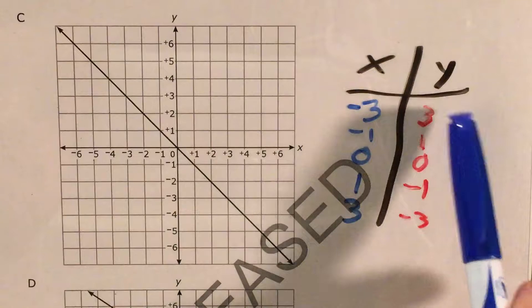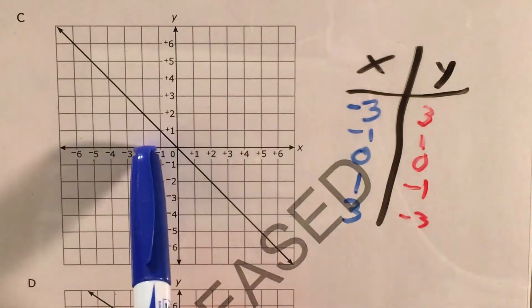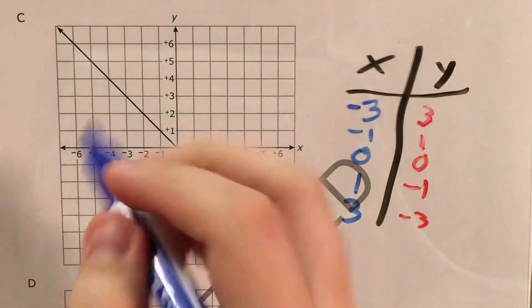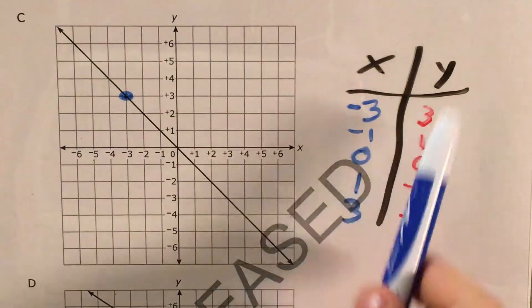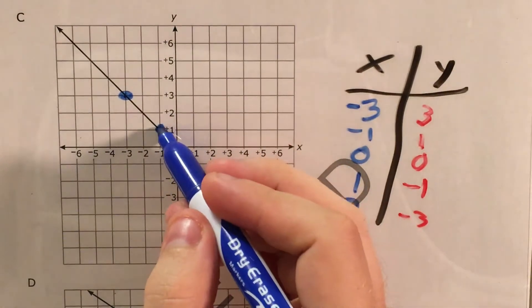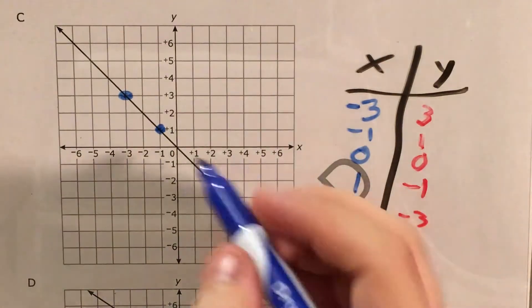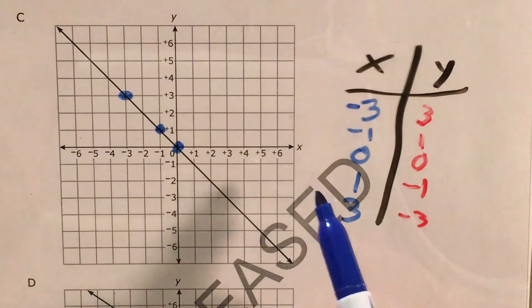So for choice C, 3 left and 3 up. Left 2, 3, up 2, 3. Okay, this one's on our line. That's a good sign. Left 1, up 1. Left and up. 0, 0 is just right there. Okay, we're still on the line at this point. That's good.